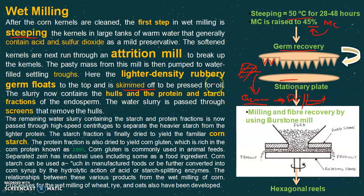After removing the germ, the remaining slurry is taken to the boarstone mill where it is further reduced in size. After size reduction, since the hull and tip cap have a different size from the endosperm particles, they can be separated through screens.